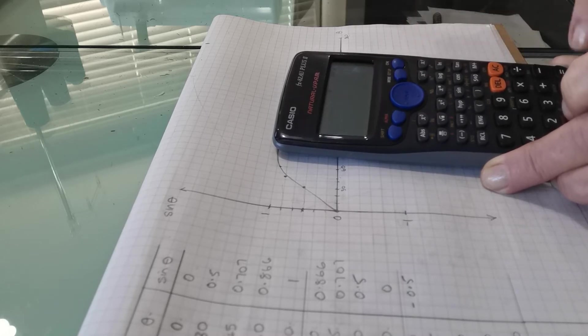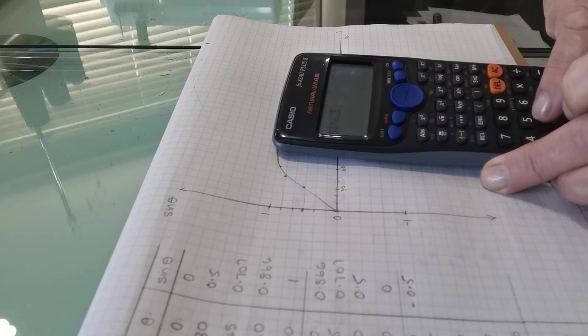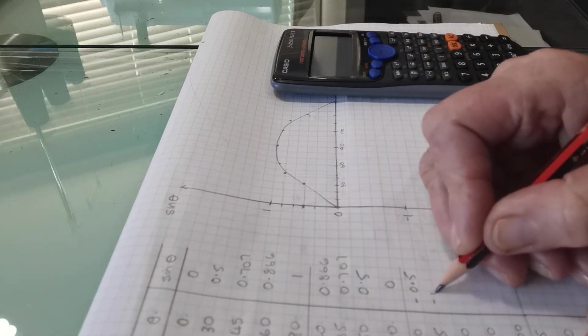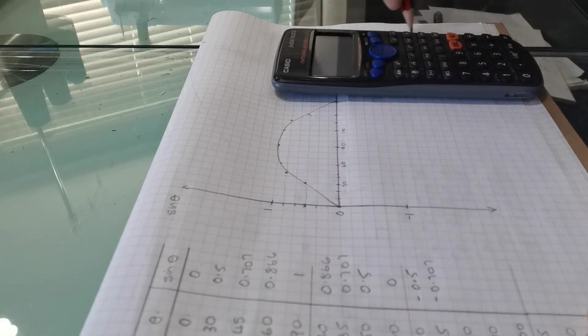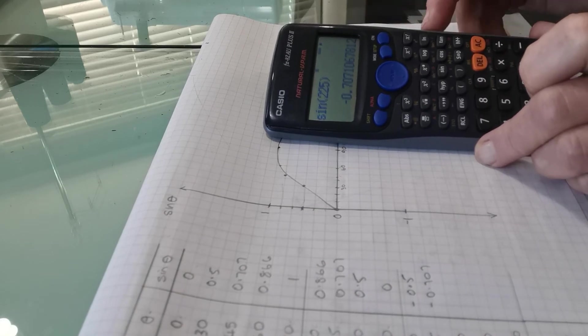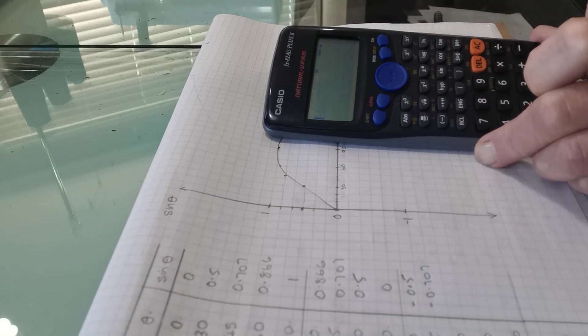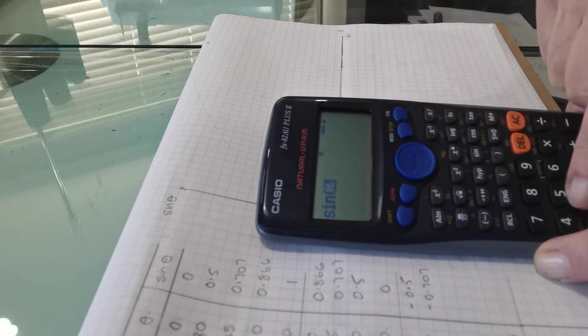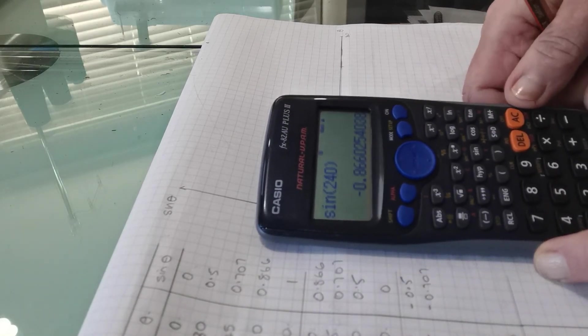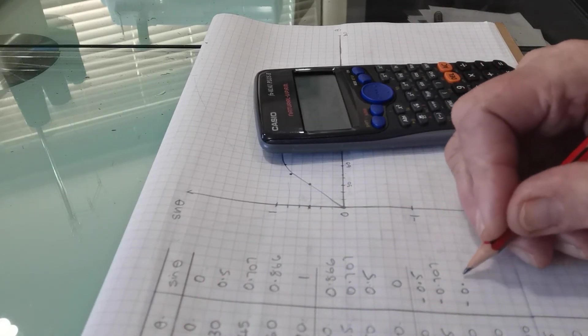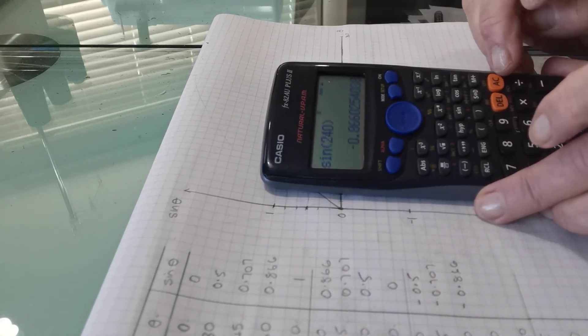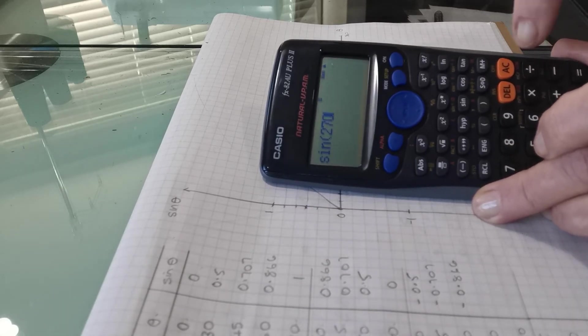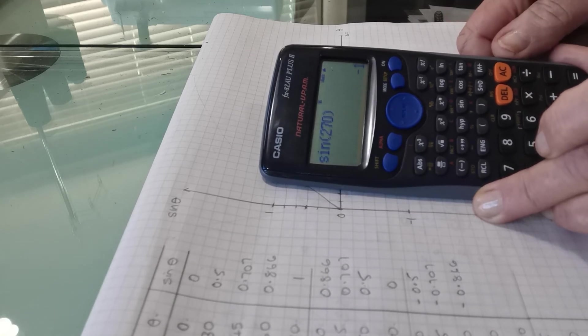I'll clear that one again. And that's sign 225. Close. Enter is negative 0.707. So we're going to go below the horizontal axis now with the next lot of points and sign of 240. Close the brackets is negative 0.866 and 270. Sign of 270. Close the bracket is negative 1.